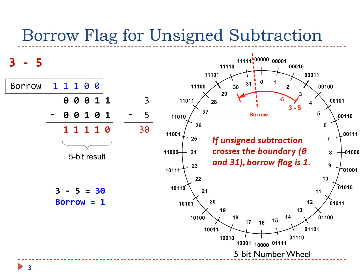The borrow flag is set if A is less than B when computing A minus B. For example, subtracting 5 from 3 requires a borrow into the most significant bits subtracted. In this example, ALU mistakenly produces 30 as the result.